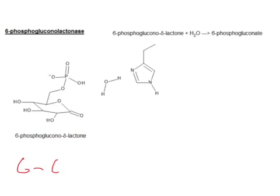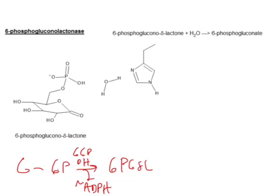So right now, we start our PPP with glucose 6-phosphate, and we use G6P dehydrogenase to make an NADPH, and we end up with this 6-phosphoglucono-delta-lactone. And now we're going to use our 6-phosphoglucolactonase to pop it open into 6-PG.